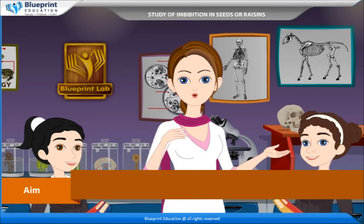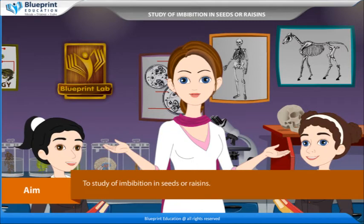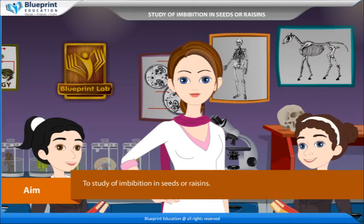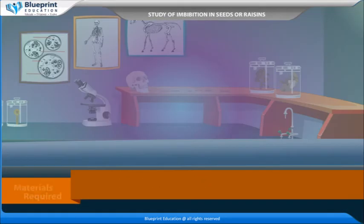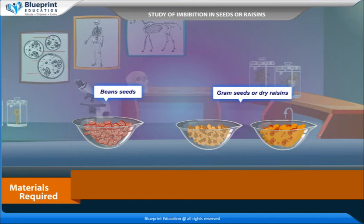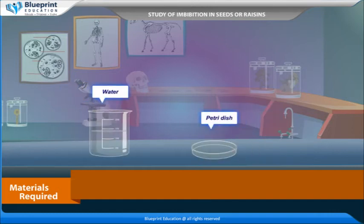The aim of this experiment is to study imbibition in seeds or raisins. The materials required are seeds of beans or gram seeds, or dry raisins with intact stalks, water, and a petri dish.